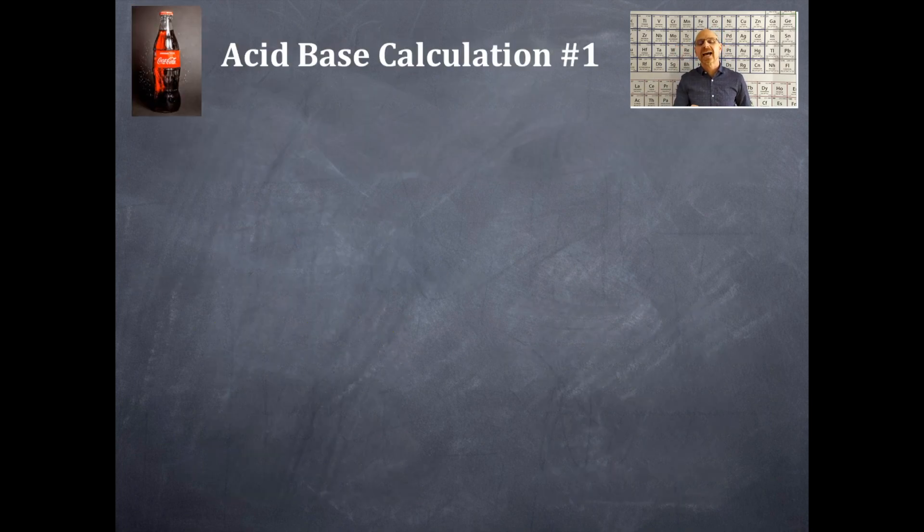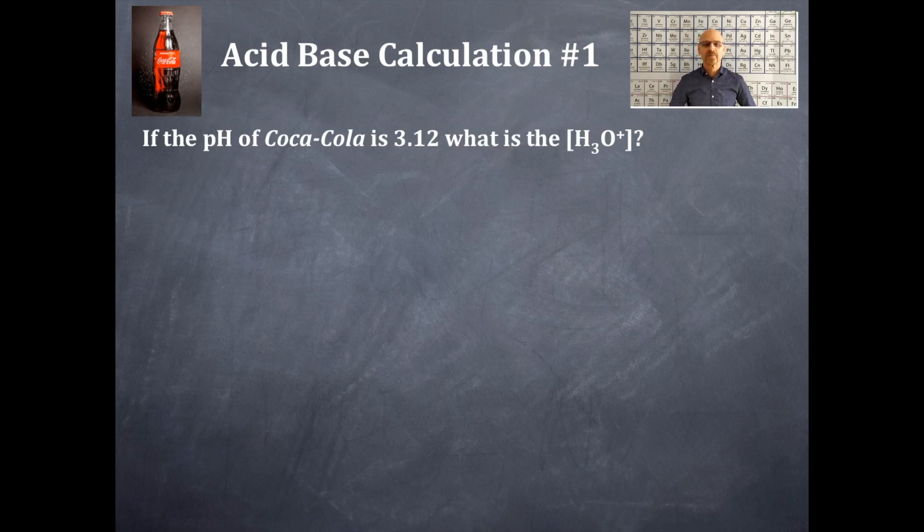So today we're doing acid base calculation number one. If the pH of Coca-Cola is 3.12, what is the [H₃O⁺]?